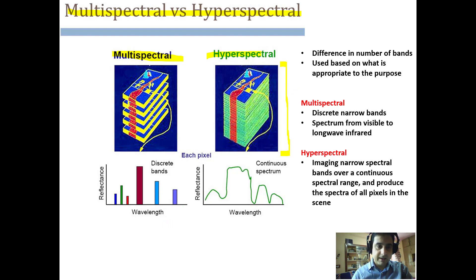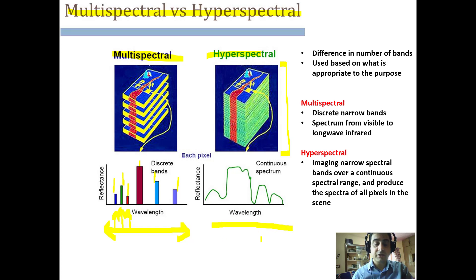In multispectral remote sensing, information is captured for certain wavelengths but there is no continuity because there are very few, discrete bands to capture the energy. In hyperspectral remote sensing, you have a whole lot of bands covering many wavelength ranges, so the gap between captured wavelengths is very small and almost every main wavelength band is captured on the sensor.